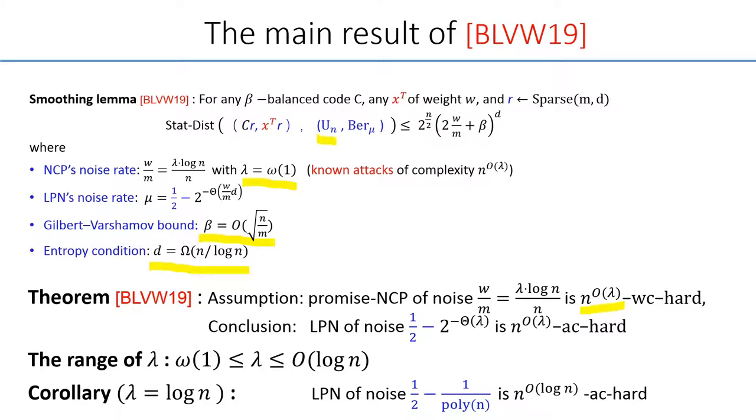We get the quasi-polynomial hardness for LPN in the high noise region, where this noise is inversely polynomially close to uniform. So this is more or less a feasibility result. There remains space for further improvement.